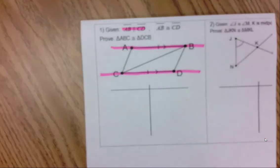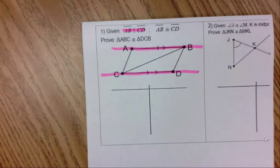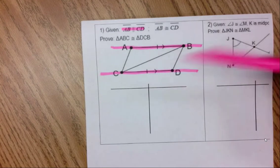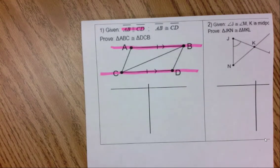And I want to reinforce that you only have parallel lines if it's written up here in the given or it has these little arrows on the diagram. Either one of those tells you the parallel lines.